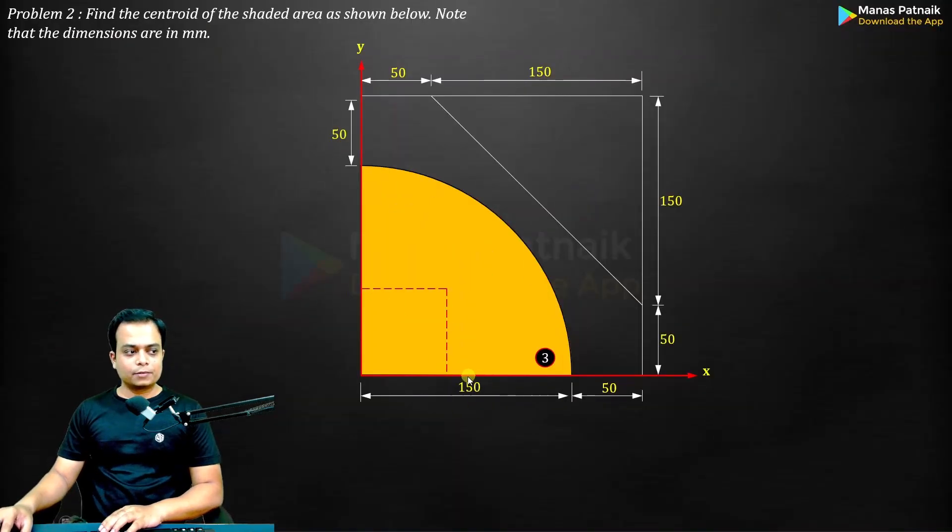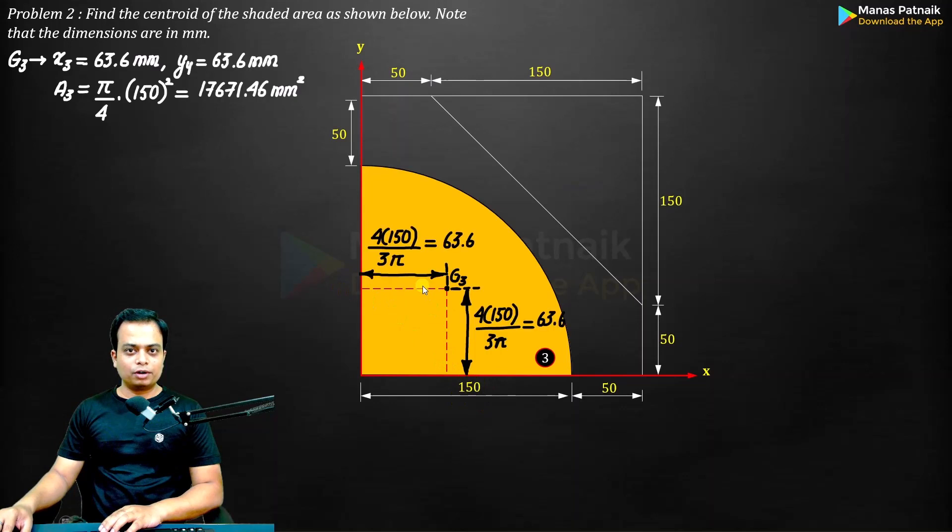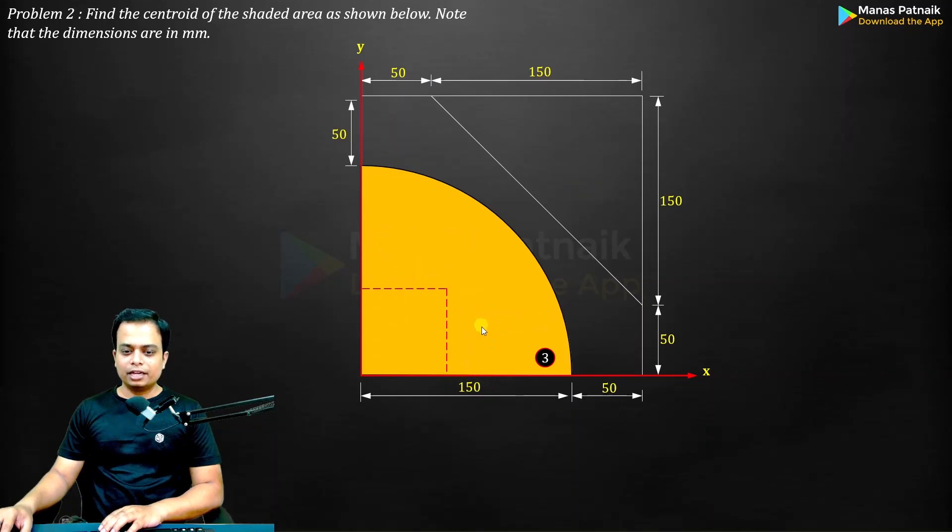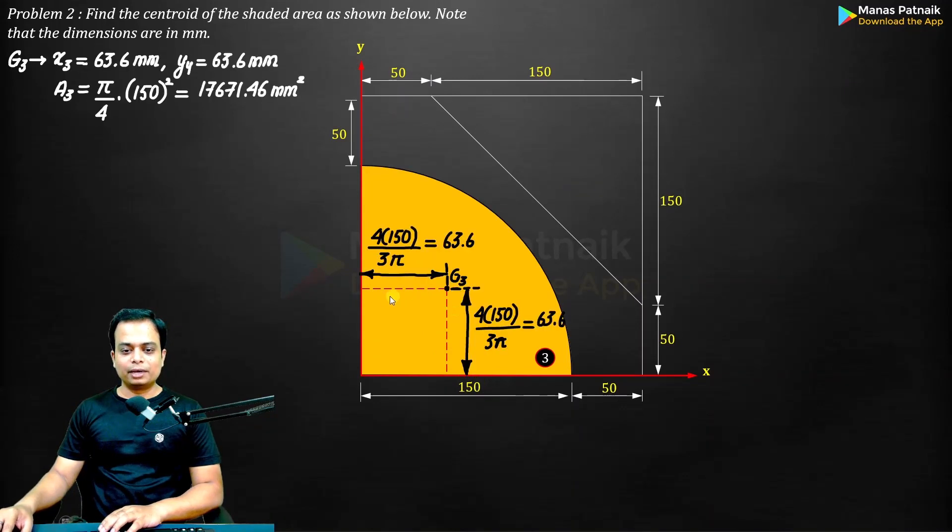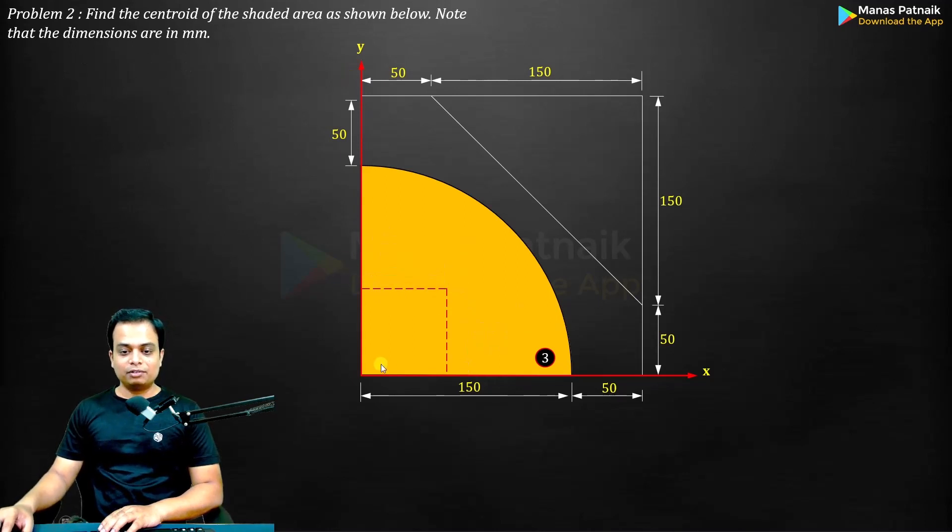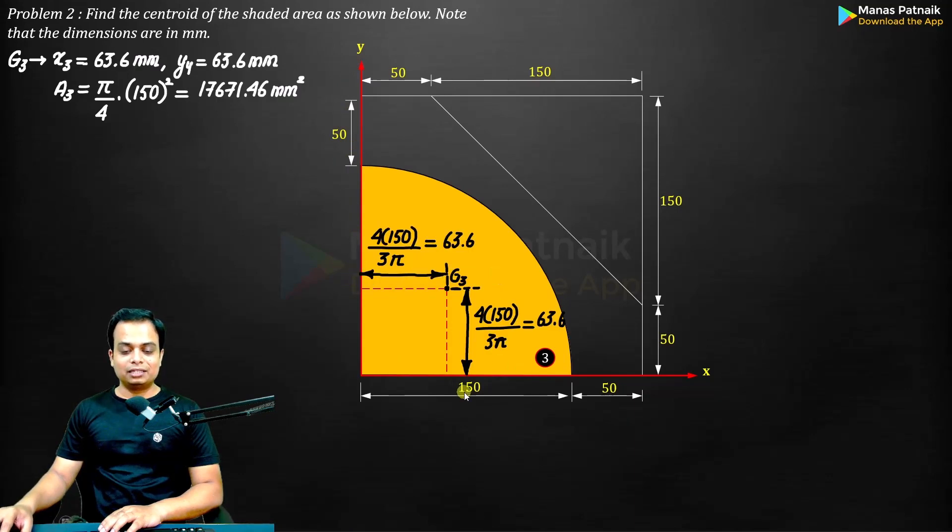Let me go back to that slide. Here it is. So this is going to be 4 times r. r happens to be 150: 4 times 150 by 3π. Again, this is also 4 times 150 by 3π. These two dimensions fortunately have directly arrived with respect to the y axis and with respect to the x axis. So this is the x₃, this is y₃. That is exactly what I've written. Secondly, as far as the area is concerned, it is a quarter circle, so πr²/4—quarter, that is divided by 4. So just do the math.